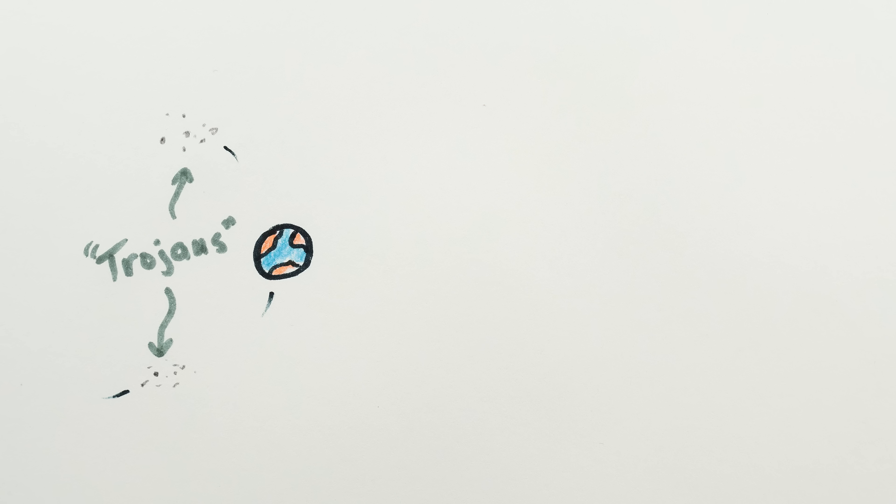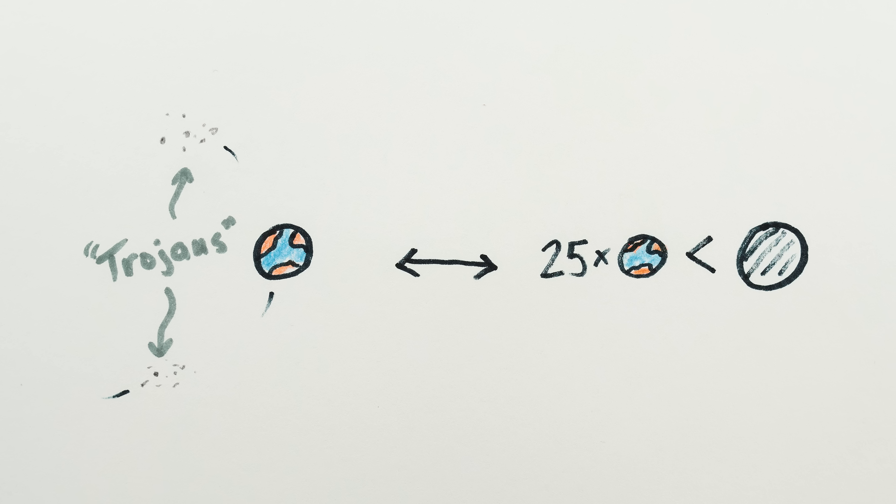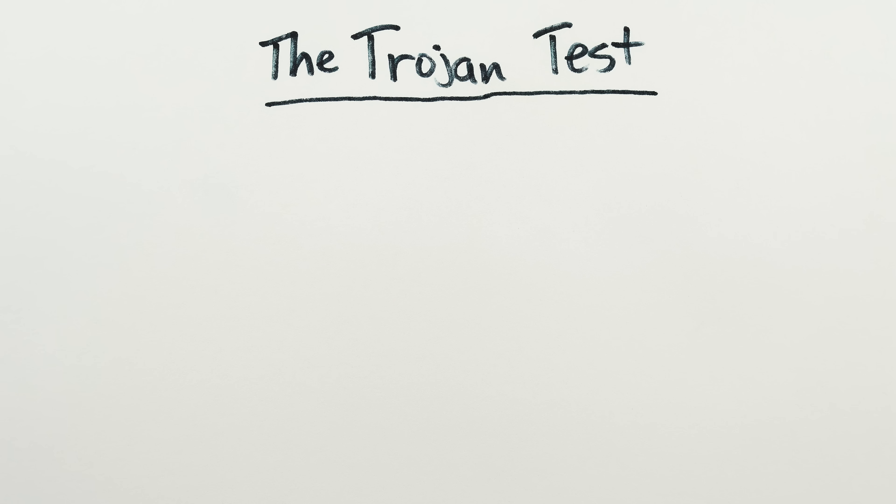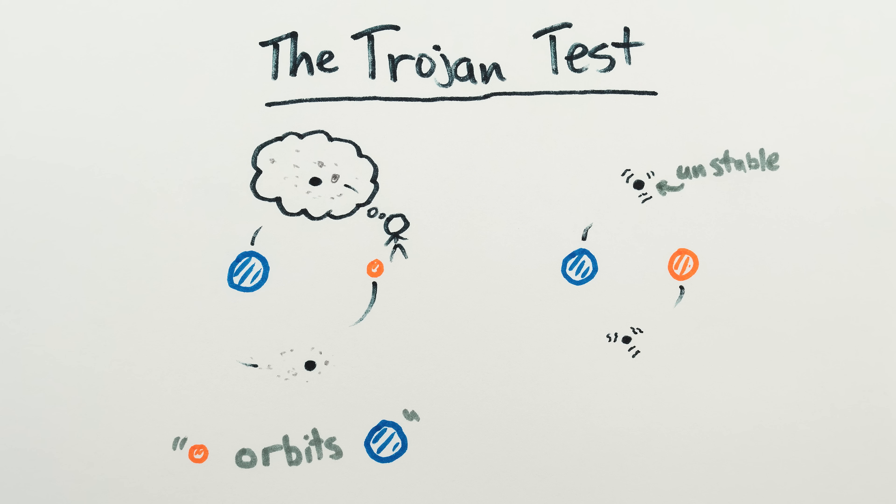In short, you can only have Trojan asteroids or moons or park your spacecraft with the engine off if you're at least 25 times less massive than the thing you're orbiting. This is the Trojan test. If you can in principle have Trojan asteroids, regardless of whether or not you actually do, then you're a little thing orbiting a big thing. If the big object is less than 25 times more massive than you, then you can't have Trojan asteroids and you should be considered a binary system.